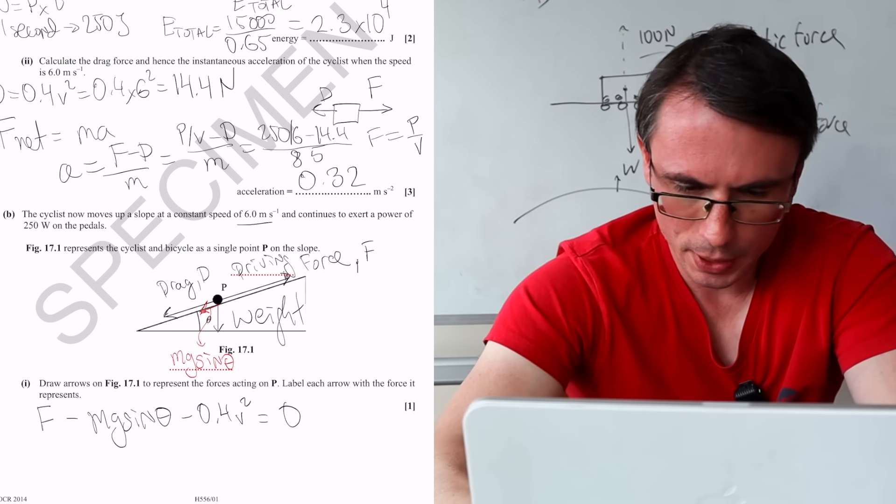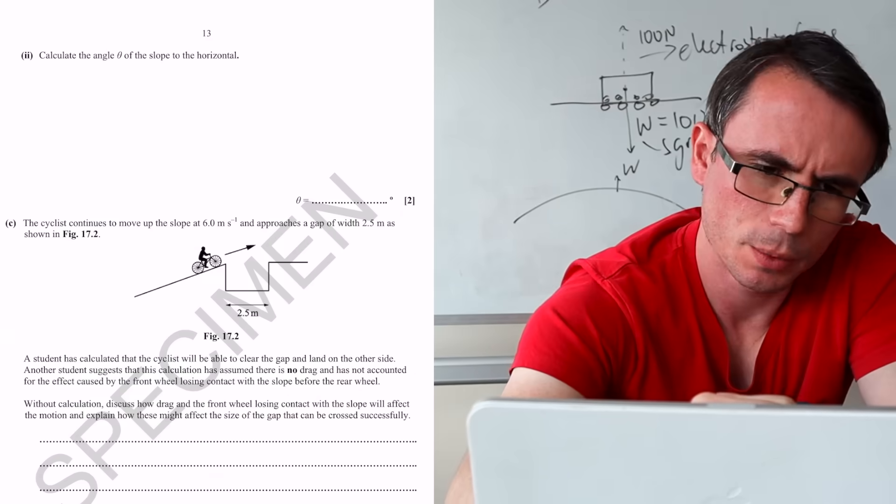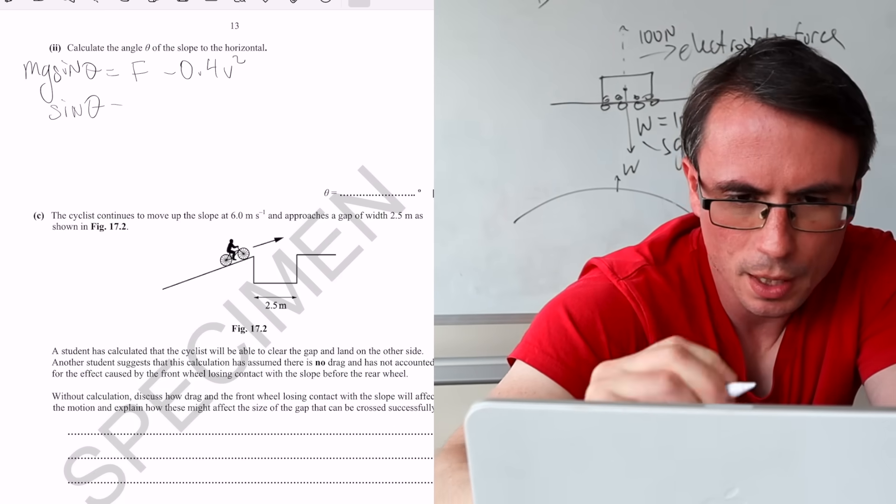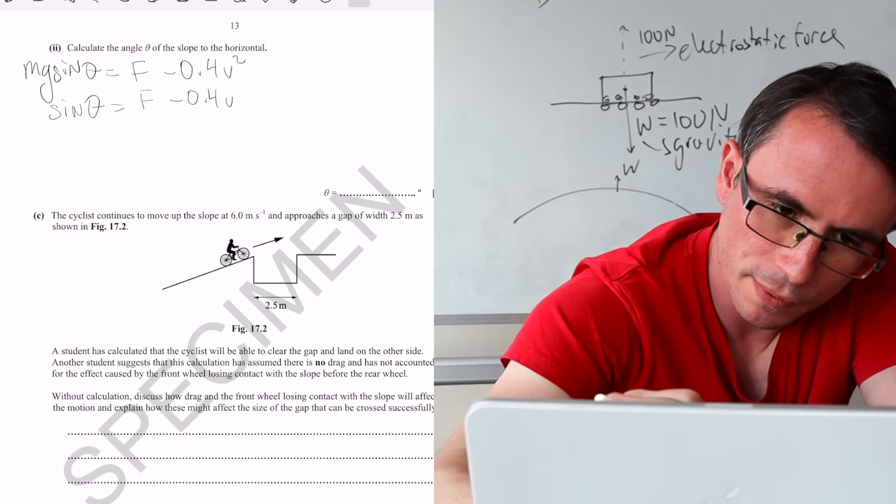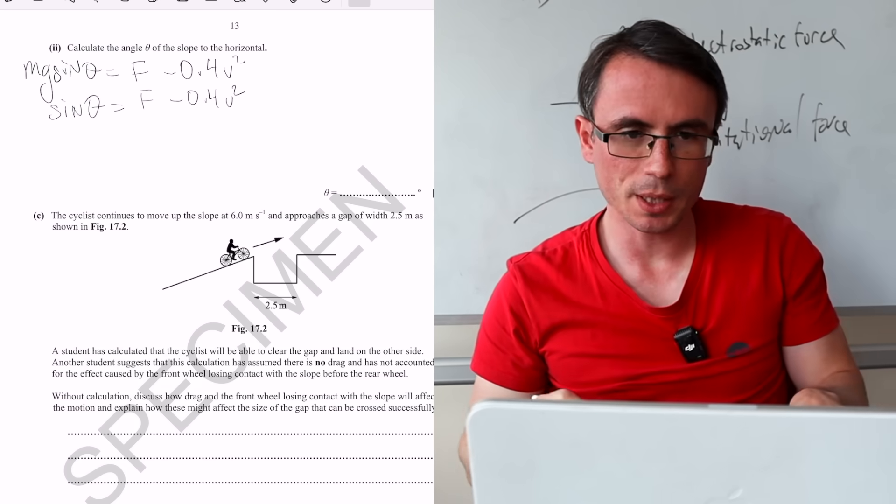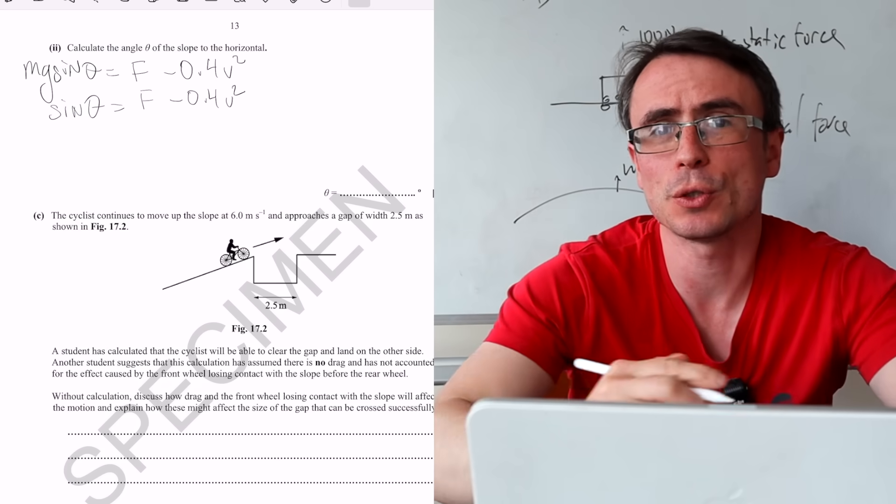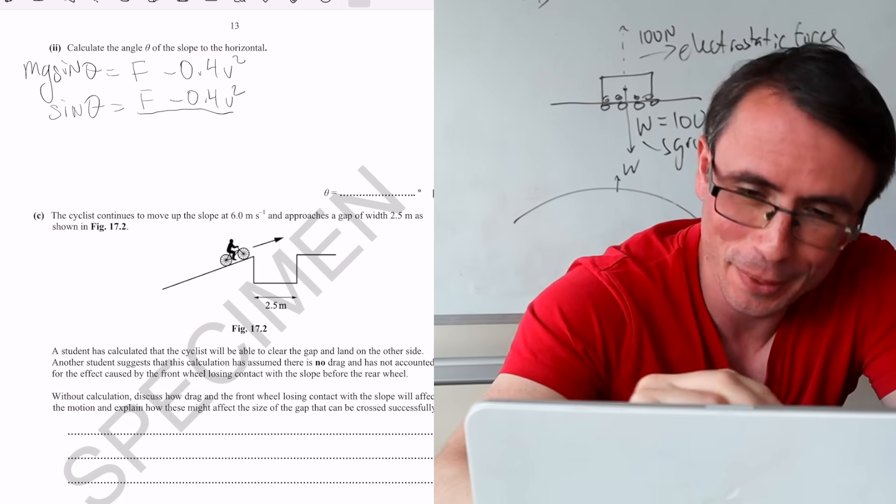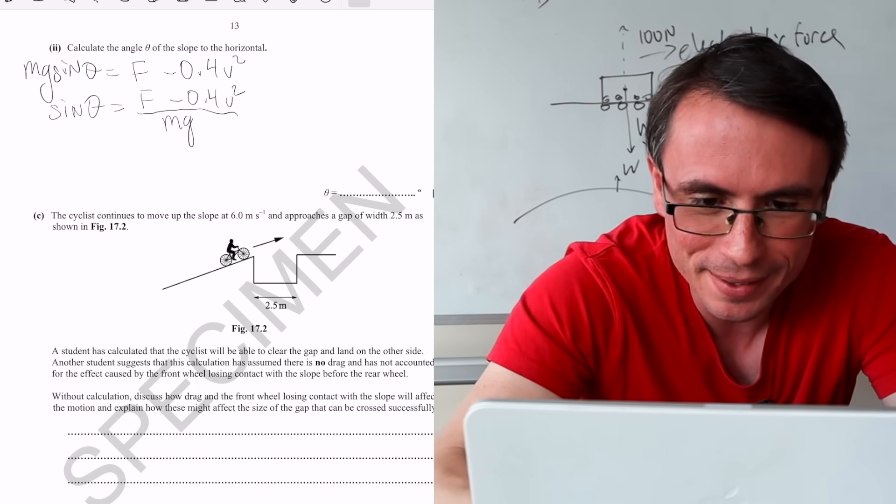Well, we're looking for the angle. So I'm just going to make Mg sine theta the subject. Notice how I'm not plugging in numbers until pretty much the very end. This means that I will only be using my calculator once and I'm less likely to make a mistake this way. Although it would be quite ironic if I do a mistake at the moment, but let's see what happens.